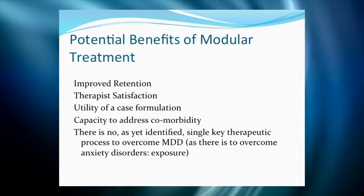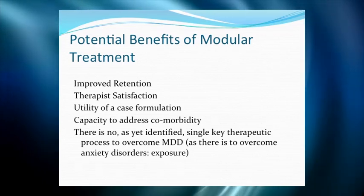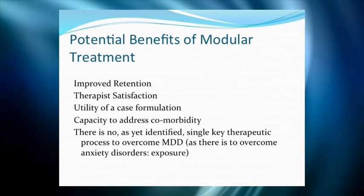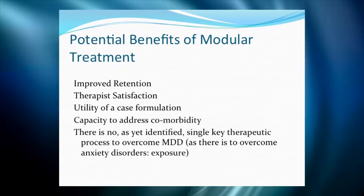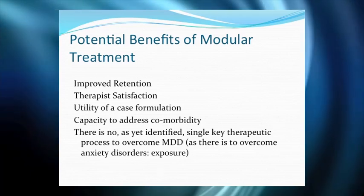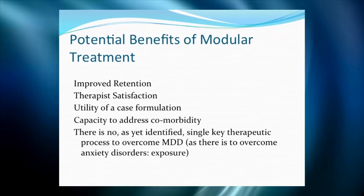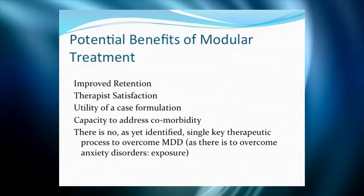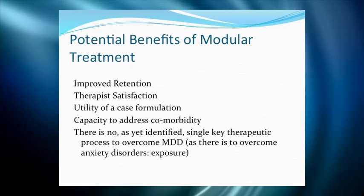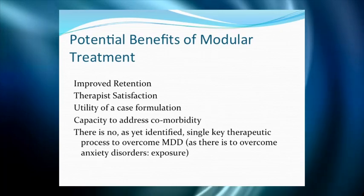Second, therapist satisfaction — therapists don't generally want to be told in routine practice that they have to do everything the same way with every patient, so this flexible approach is an advantage. Third, using a case formulation is more demanding of the therapist — they have to articulate what they're thinking — but they're really thinking about it anyway, so you're just pushing them to write it down. The next advantage is it gives you some ability to address comorbid problems. For example, if you have an oppositional kid who's depressed, you can put elements in to deal with the oppositional features; if you have an anxious kid who's depressed, there are elements to help with anxiety.